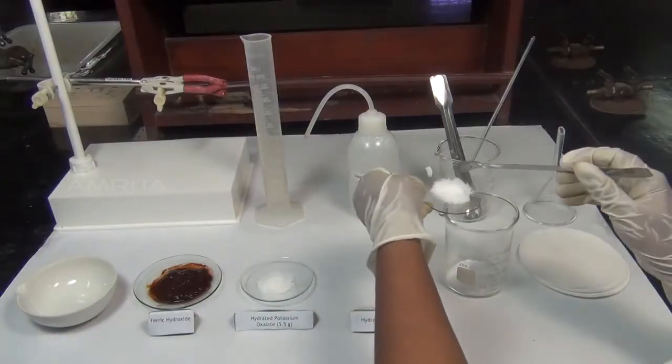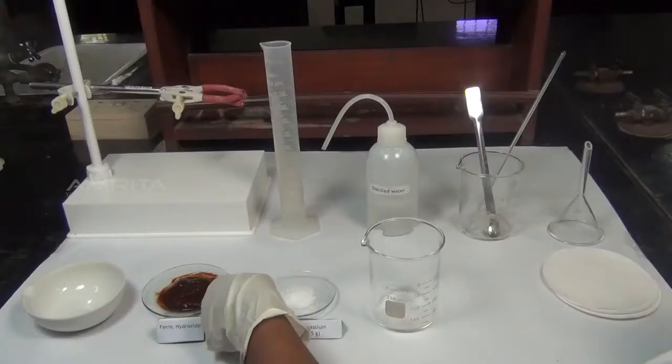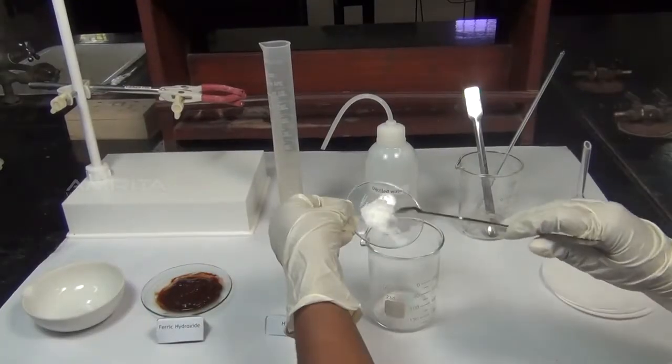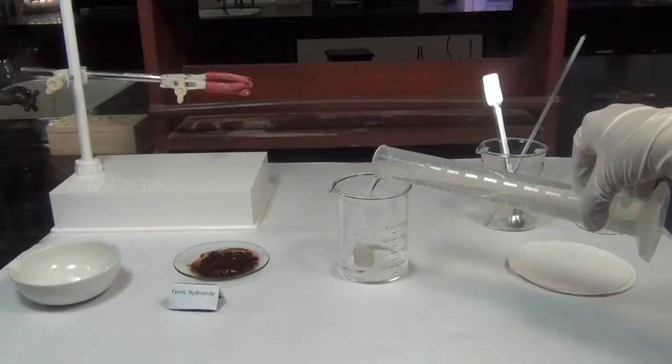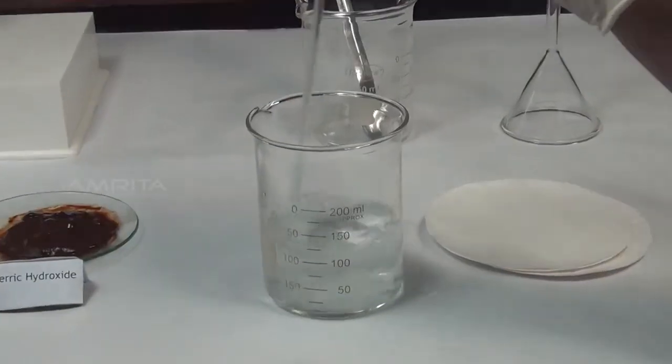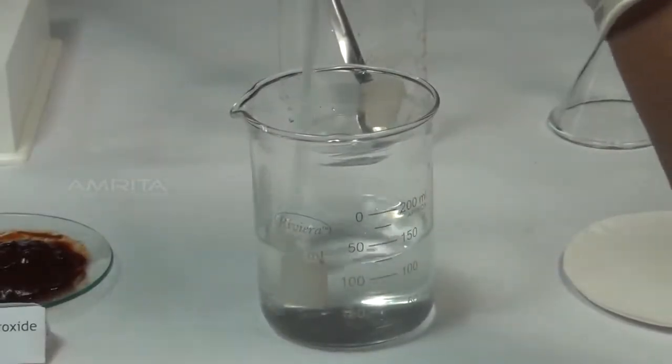In another beaker, take 4 g of hydrated oxalic acid and 5.5 g of hydrated potassium oxalate. To this add about 100 ml of distilled water. Stir the solution thoroughly using a glass rod to get a clear solution.